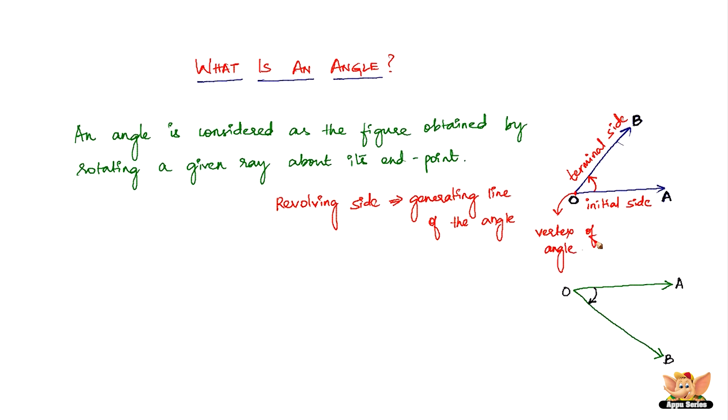This is the vertex of the angle. So this is a very simple explanation of what is an angle. This is all you need to know as far as an angle is concerned.